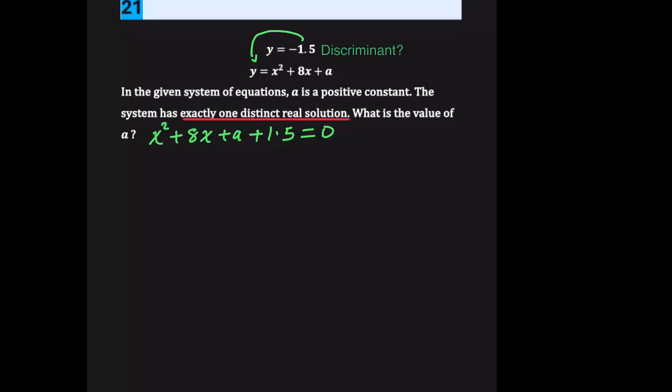What is the discriminant? The discriminant is this expression: b squared minus 4ac. And that expression tells us how many roots or how many real solutions this quadratic equation is going to have.